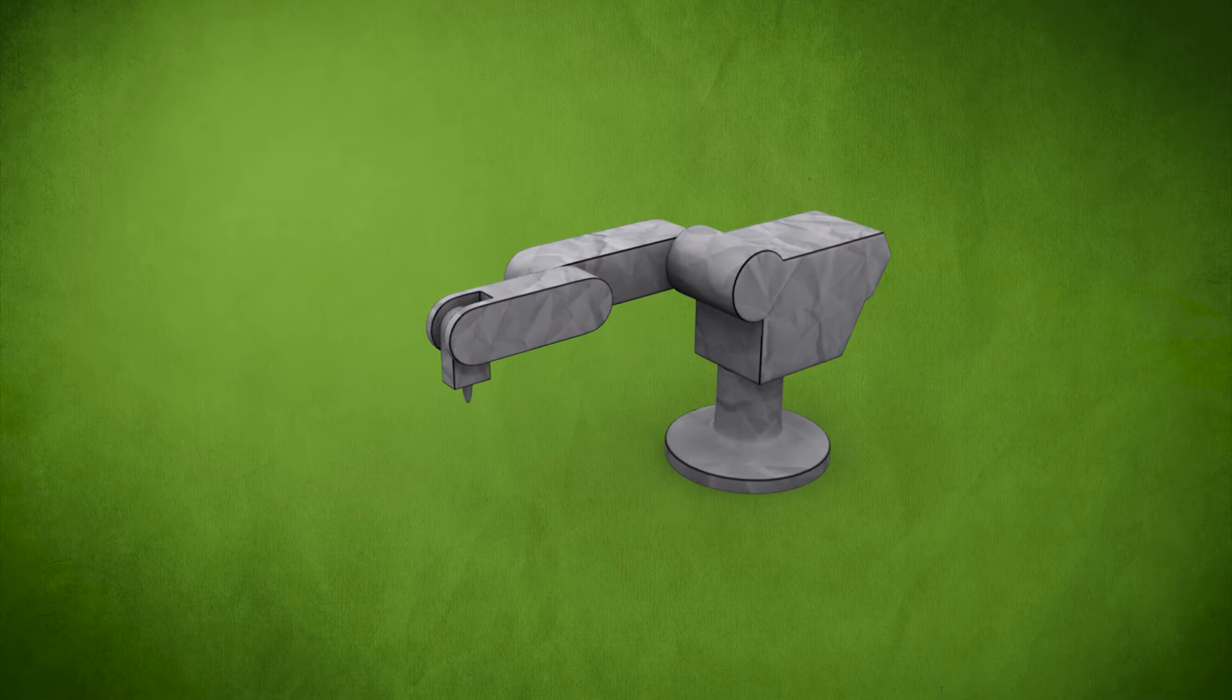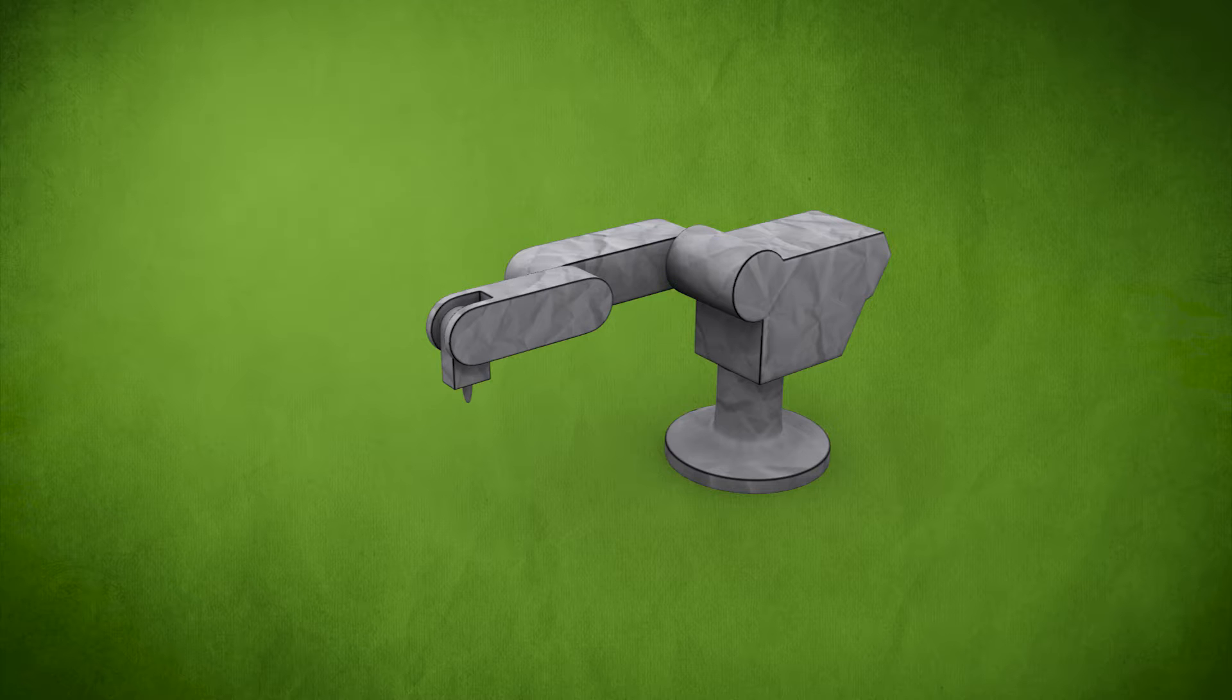Forward kinematics enables us to compute the position of a robot's end effector, for example, the gripper or welding tip, based on the robot's joint configuration.